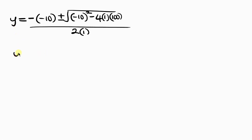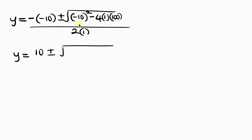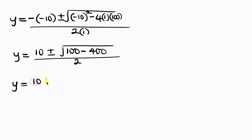Let's simplify. We have y equal to 10 plus or minus the square root of — negative 10 squared is 100, minus 4 times 1 times 100 is 400 — all over 2. So this becomes y equal to 10 plus or minus the square root of 100 minus 400, which is negative 300, all over 2. Our next step is to break down this negative 300.